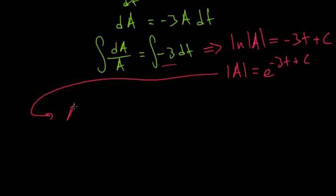So this is equal to A equals, and for the right-hand side, since the exponent is a sum, we can separate this into e to the c times e to the minus 3t. And e to the c is just some new constant. And we could just call this b here. So we have b times e to the minus 3t.